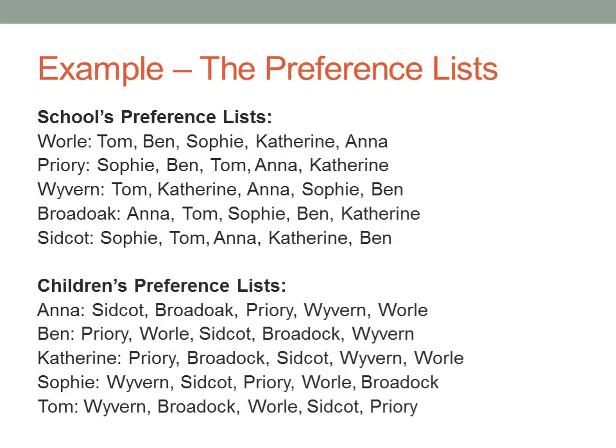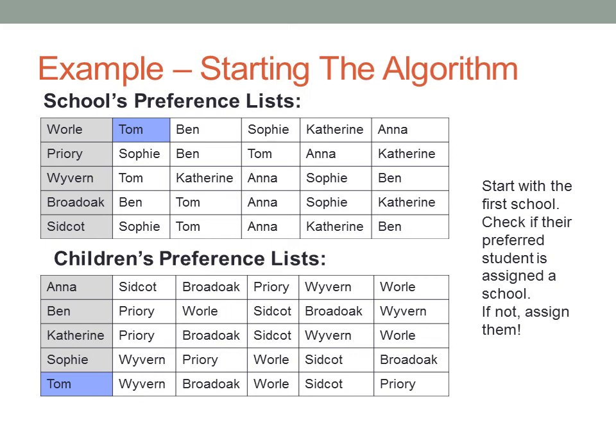If we put this into tables, it becomes a lot easier to see. Now that we have them in tables, we can start the algorithm. We start off by looking at the first school's preference. We see that Well's preferred student is Tom. We highlight these blue so we know what we are currently looking at. We then look at Tom and find that he has not yet been matched with a school, so we match Tom to Well and show this by highlighting the relevant fields red.